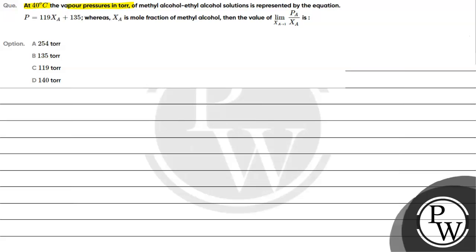At 40 degree Celsius, the vapor pressure in tor of methyl alcohol and methyl alcohol solution is represented by the equation P equals 119 chi A plus 135, where chi A is the mole fraction of methyl alcohol. The value of limit chi A tends to 1, P A by chi A is: option A 254 tor, option B 135 tor, option C 119 tor, option D 140 tor.